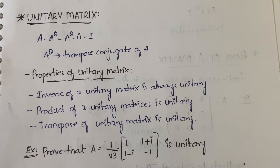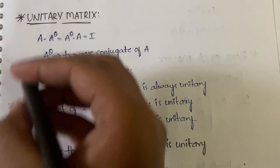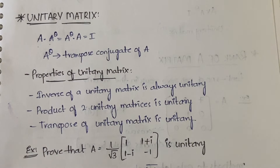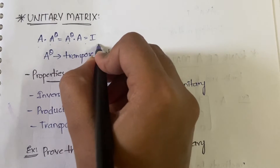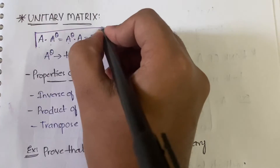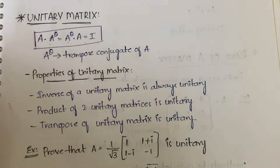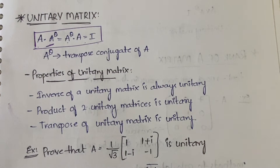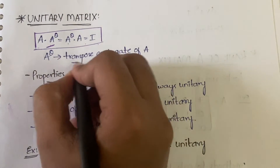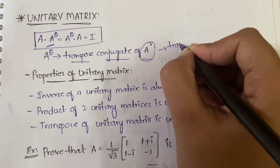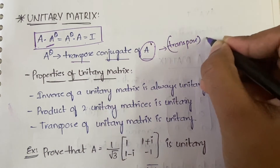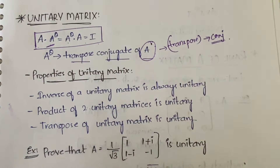A unitary matrix is any matrix which obeys the condition A·Aθ = Aθ·A = I. Any matrix which obeys this property is called a unitary matrix. Aθ is nothing but the transpose conjugate of A — you first find the transpose of A, and then calculate the conjugate of that transpose.